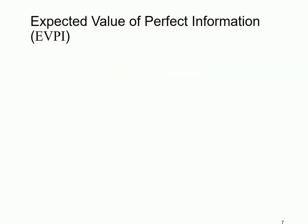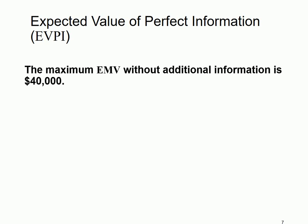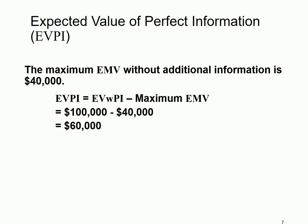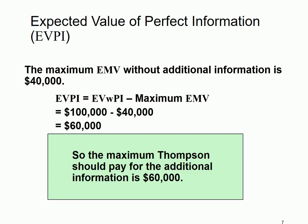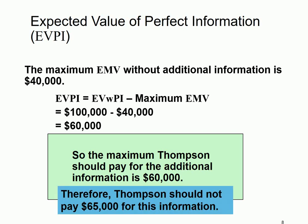Now we are ready to find the EVPI. The maximum EMV without additional information is $40,000 — the payoff when you make the decision before knowing whether the market is favorable or not. Using the EVPI formula, the first term is the EV with perfect information ($100,000), which is the payoff if you decide after knowing the market outcome, minus the second term ($40,000). The difference — the value of having additional information — is $60,000. Since $60,000 is smaller than the cost of $65,000, we conclude that Thompson should not pay for this service.